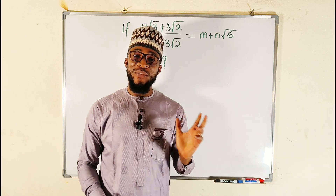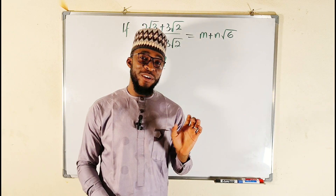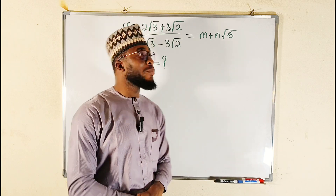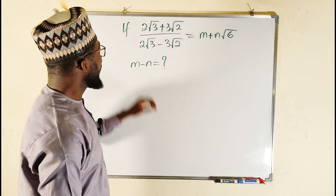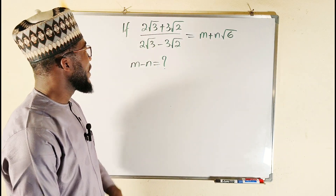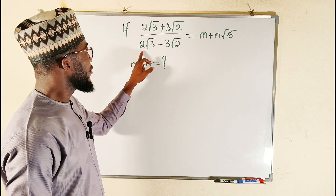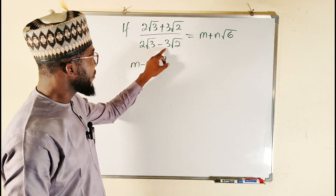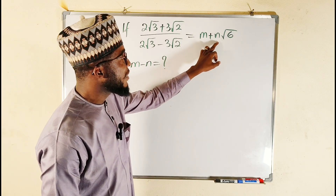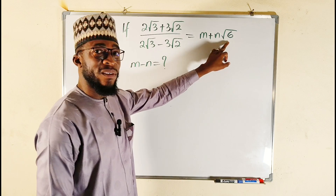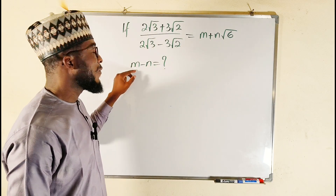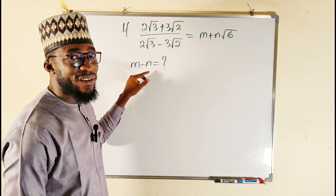Hello, good dear viewers. Let us find a solution to this radical problem. We are given that if 2√3 + 3√2 divided by 2√3 - 3√2 is equal to m + n√6, what is the actual value of m minus n?